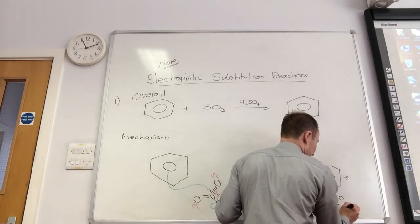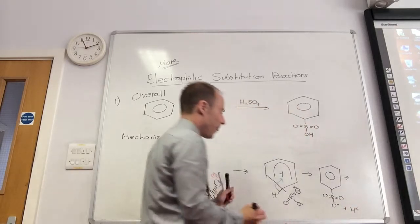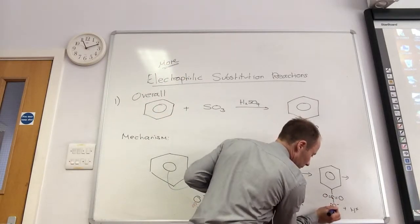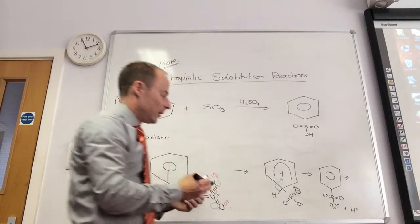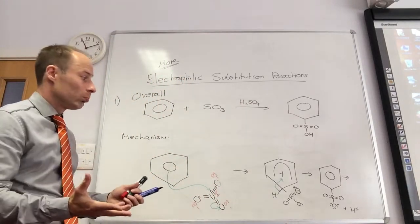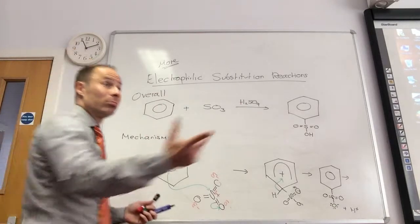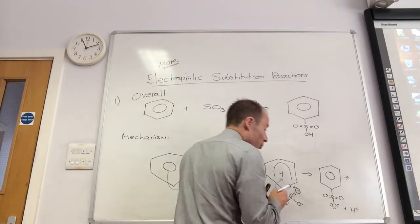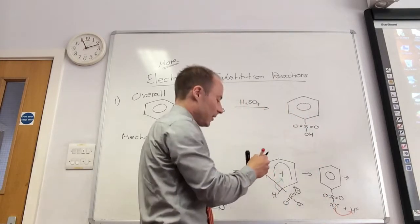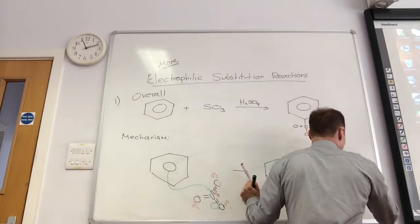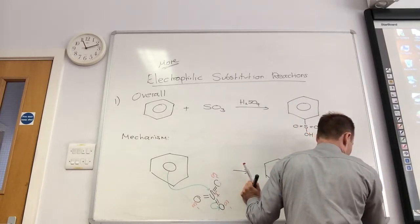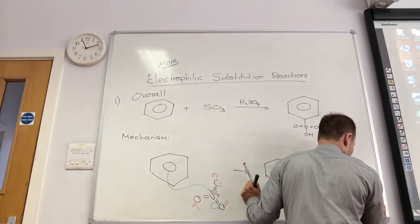O minus plus H plus. Final step. Yeah, and I draw that with my electrons going to the H plus. And that gives me my product.